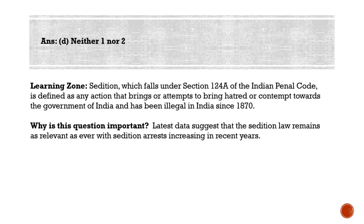The origin of sedition law dates to 17th century England, where lawmakers believed only good opinions of the government should survive, as bad opinions were detrimental to the government and the monarchy. This law was borrowed and inserted into Section 124A of the IPC — not CrPC — in 1870, before independence. The British used the sedition law to convict and sentence freedom fighters; it was first used to prosecute Bal Gangadhar Tilak in 1897.